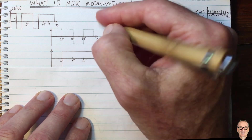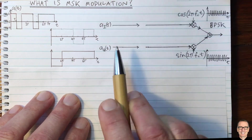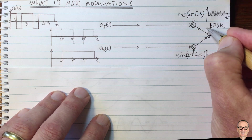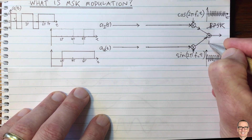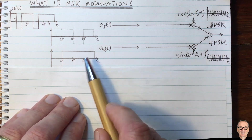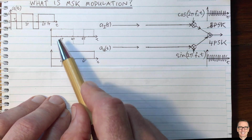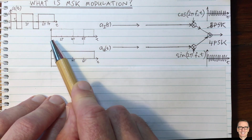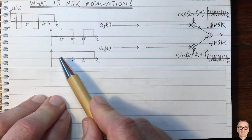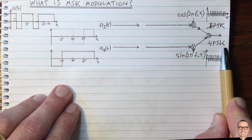We call this in-phase component A_I(t) and the other the quadrature component. So we don't have BPSK anymore — now we have what's called 4PSK, because there are four symbols and four different phases from the combinations of these. The advantage is we're only switching at half the rate, every 2T instead of 1T, which means we've halved the bandwidth.